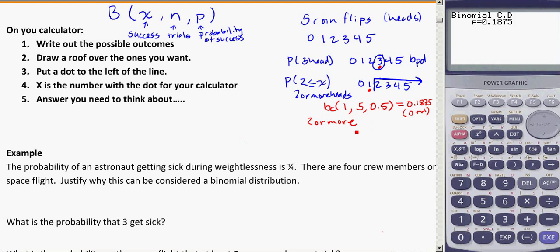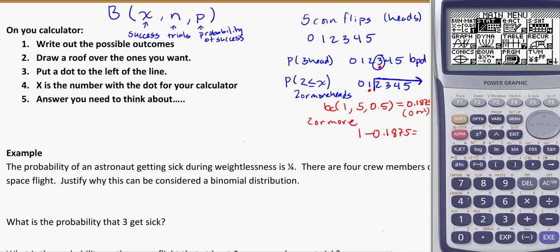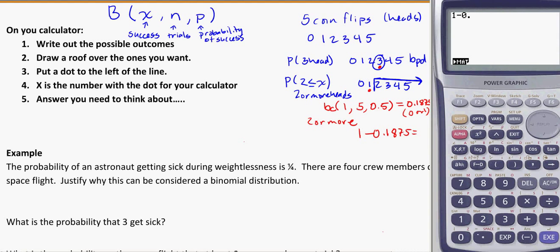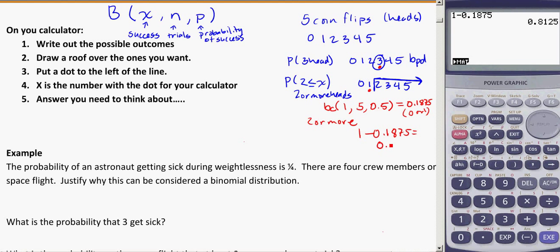So to get two or more, what we were actually looking for, we have to do 1 minus 0.1875 to get our answer. So 1 minus 0.1875. The actual probability of two or more is going to be 0.8125 for two or more heads. So when I want you to think about that answer, if you've got something like this, a bracket with a dot to the left of it, your answer is going to be equal to 1 minus what your calculator gives you.